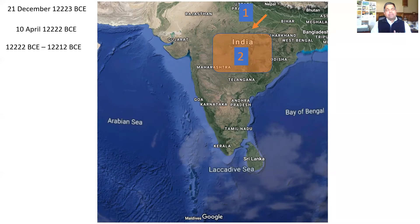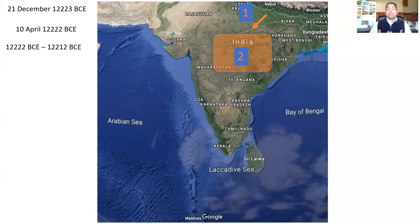Very soon, Ram left Chitrakut and started roaming through the Dandakaranya. This broad area — shown here with number two — includes parts of modern day Uttar Pradesh, Madhya Pradesh, Chhattisgarh, possibly parts of Odisha, Maharashtra and Andhra Pradesh. This very broad area known as Dandakaranya is where Ram, Lakshman and Sita spent about 10 years, as per the descriptions in Valmiki Ramayana.